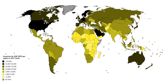GDP can be contrasted with gross national product, or as it is now known, gross national income (GNI). The difference is that GDP defines its scope according to location, while GNI defines its scope according to ownership. In a global context, world GDP and world GNI are therefore equivalent terms.